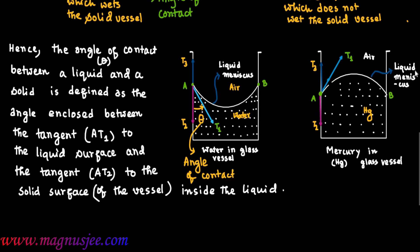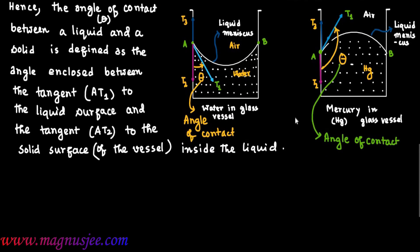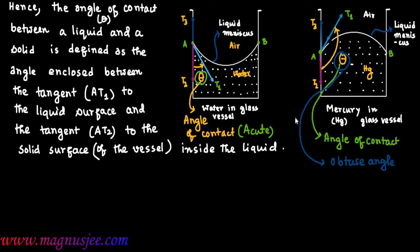Similarly, for mercury in a glass vessel, the angle subtended by tangent T1 with tangent T2 inside the liquid is theta, which is also known as angle of contact. Angle of contact is the angle subtended by T1 to the liquid surface with the tangent drawn to the solid surface of the container inside the liquid. For the liquid which wets the solid container, the angle of contact is acute.